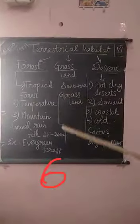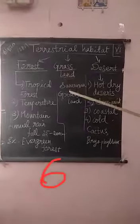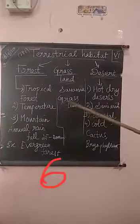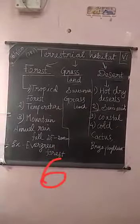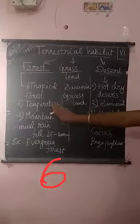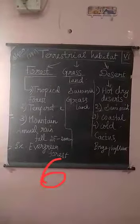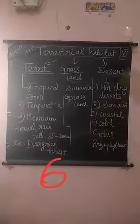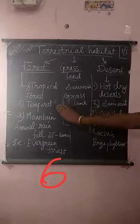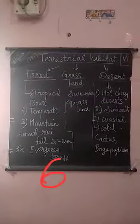There are also three types of forest. The first one is tropical forest. The second one is temperate forest — temperate, not temperature — temperate forest. Then mountain forest. These are the three types of forest: tropical, temperate, and mountain forest.